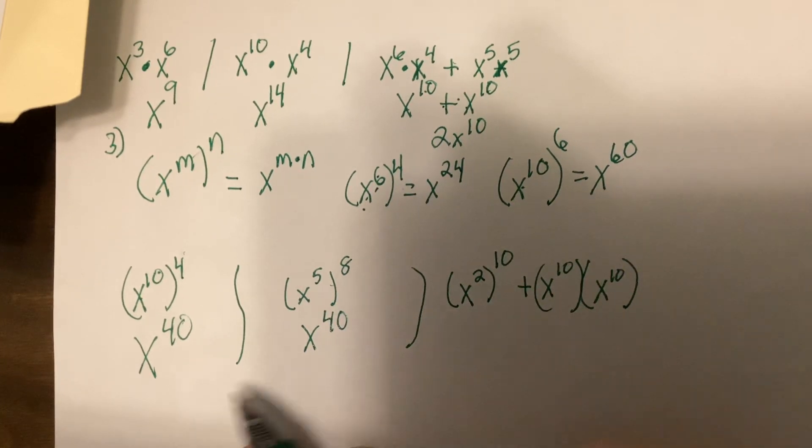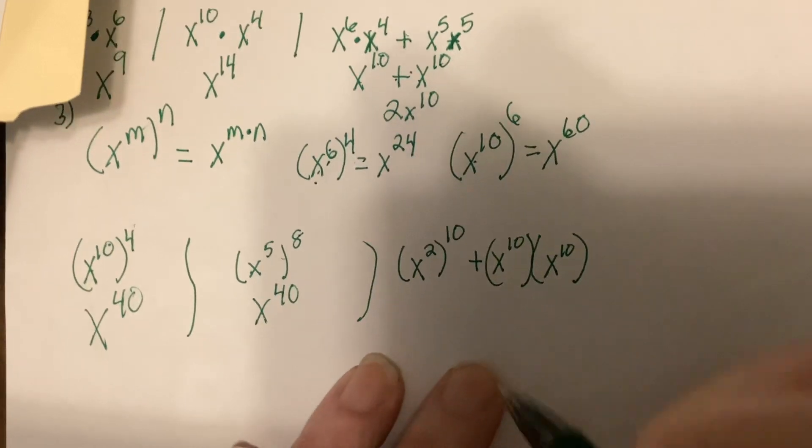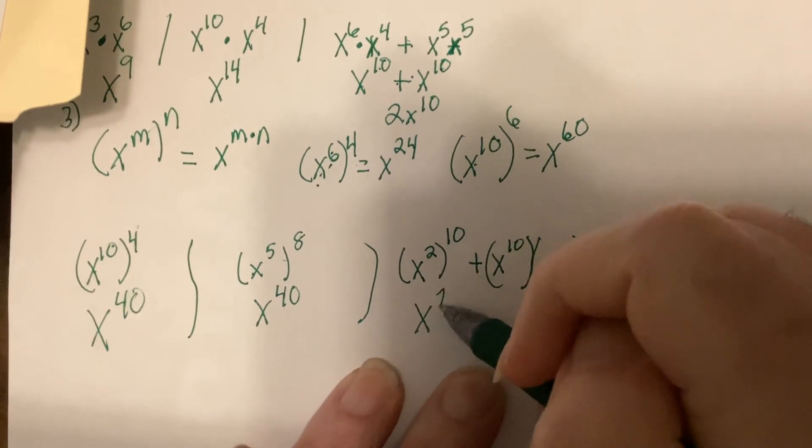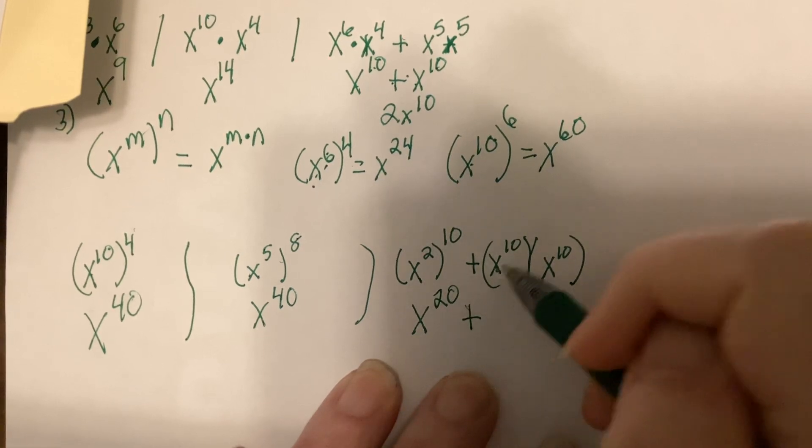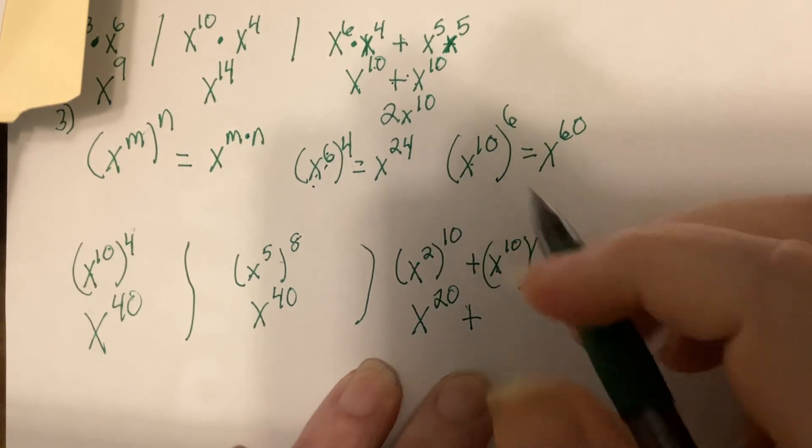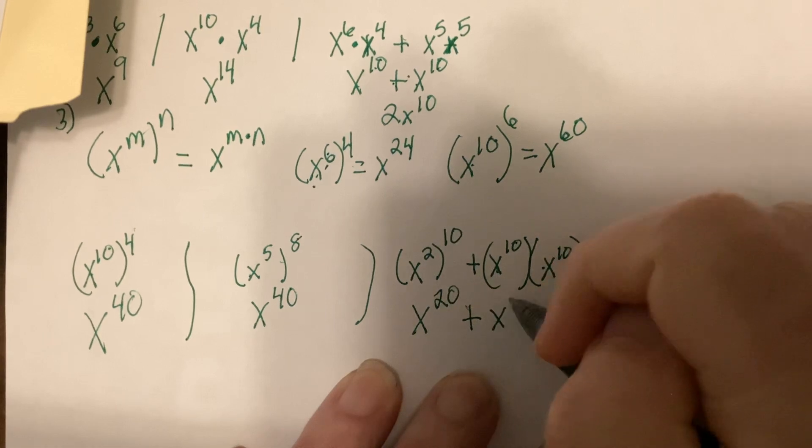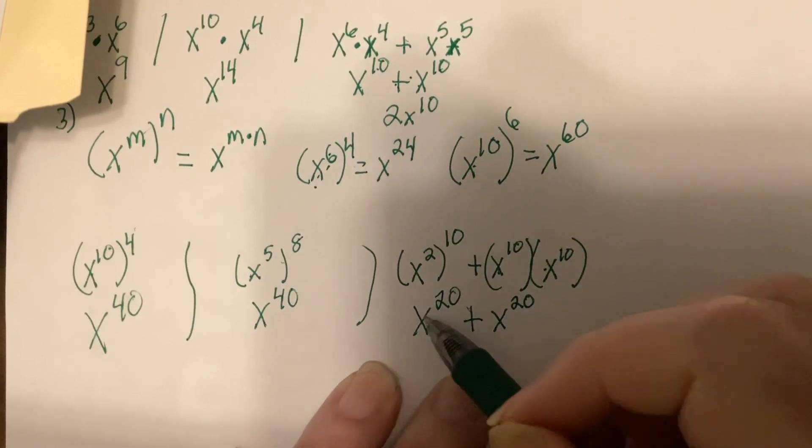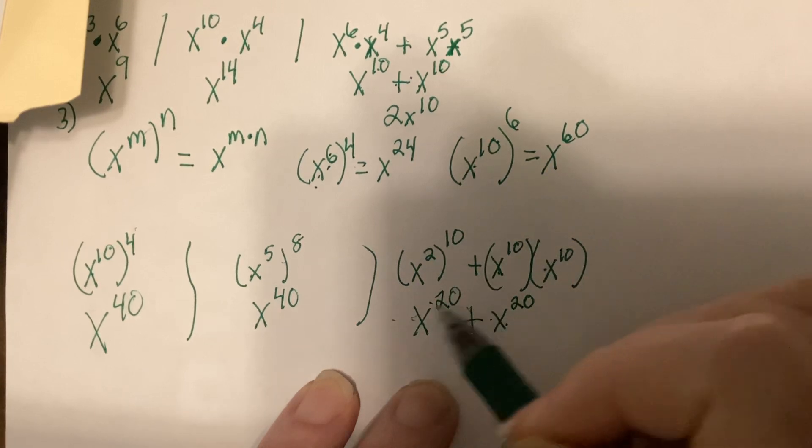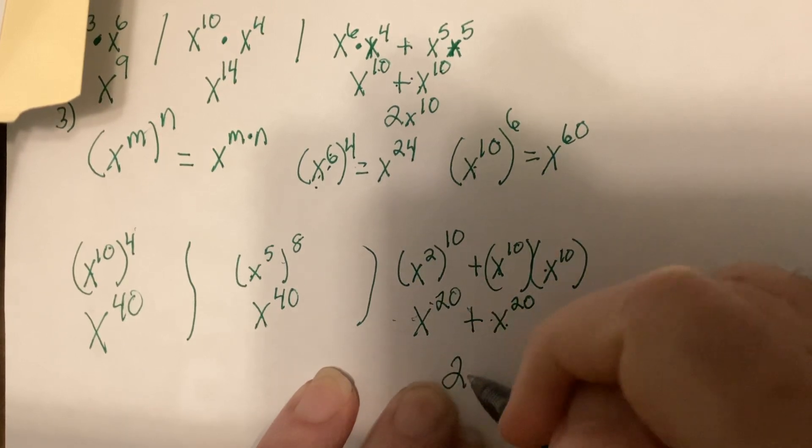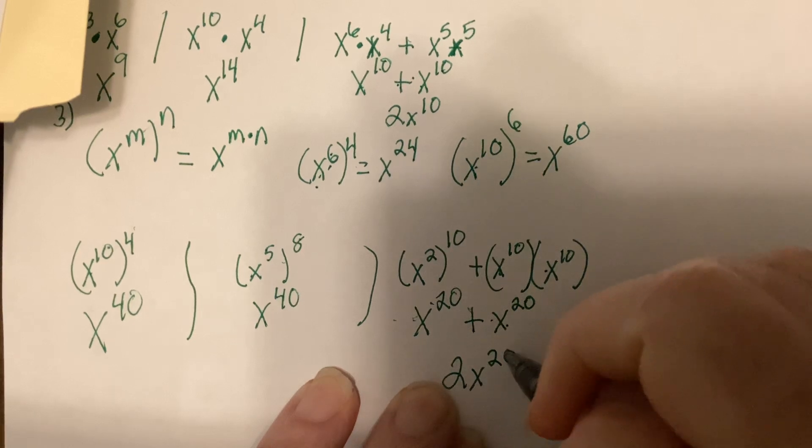Wow, 2X to the 40th. Here, this would be X to the 20th. Oh, when you multiply two things, same base, you add the powers. So, this would be X to the 20th. When you have the same base, same power, you add the numbers out front. 1 plus 1 is 2. Do not change the power.